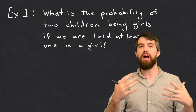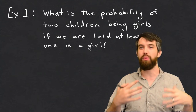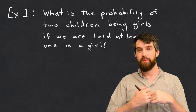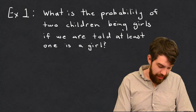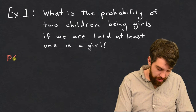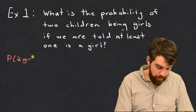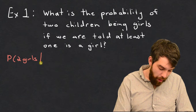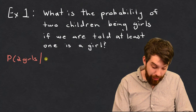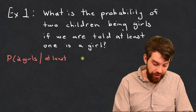What I'm going to do is write down the formulas for conditional probability, set it up formally, compute our answer, and then see whether that answer makes any sense. So what I'm interested in is the probability that what they have is two girls, given the piece of information: at least one girl.